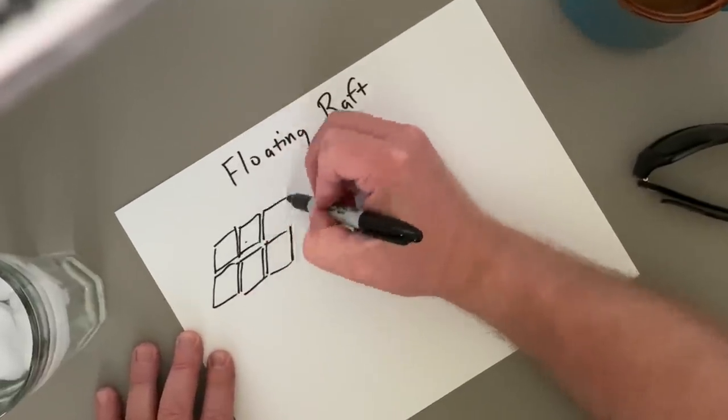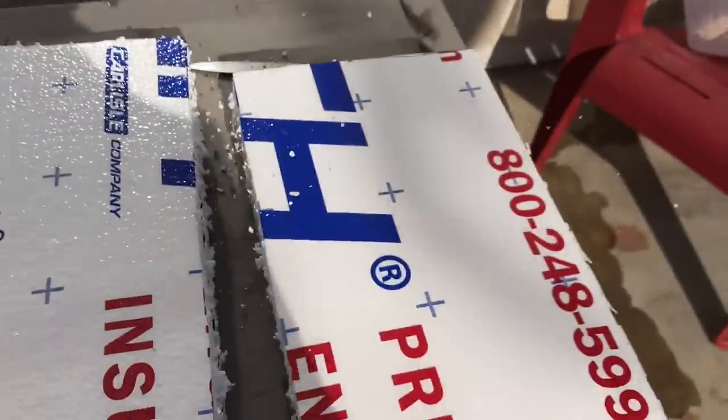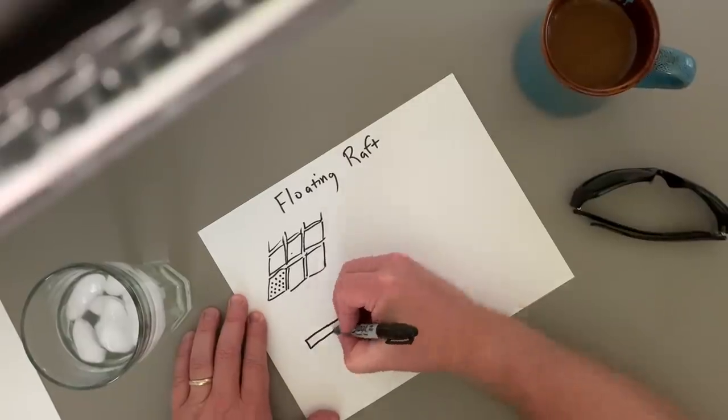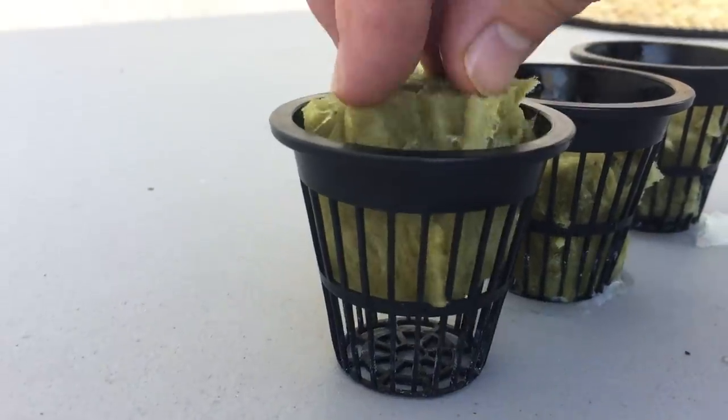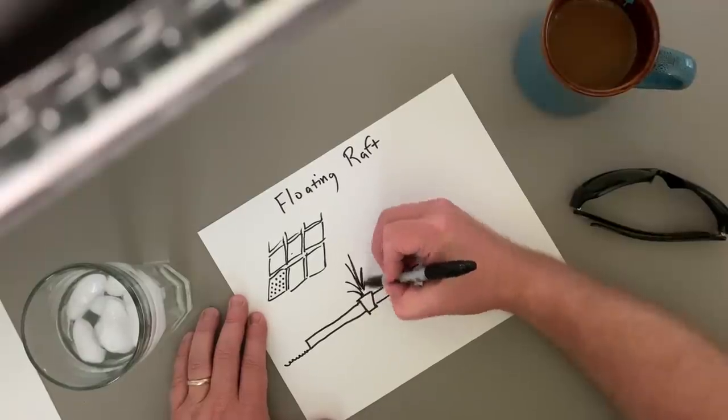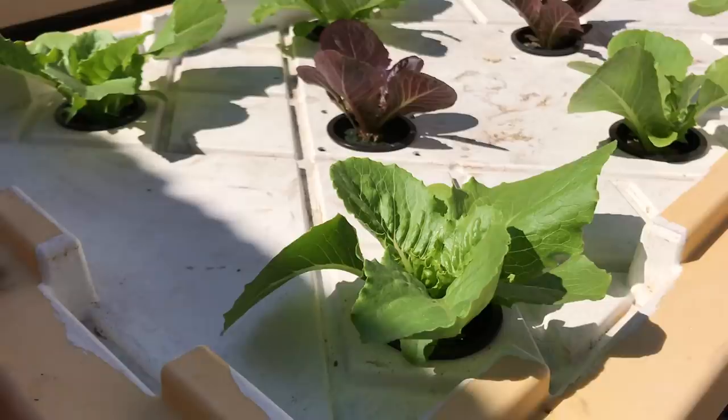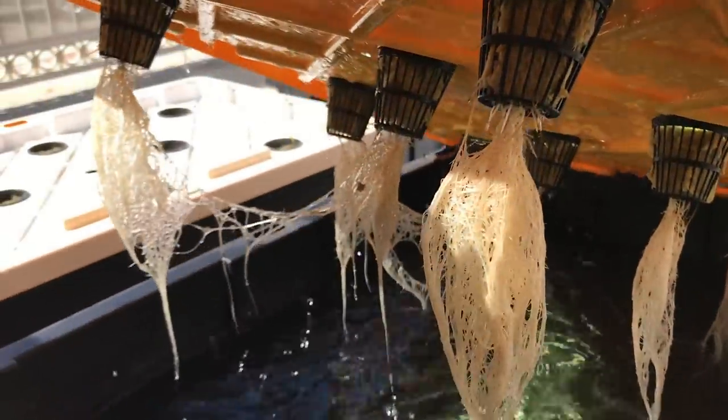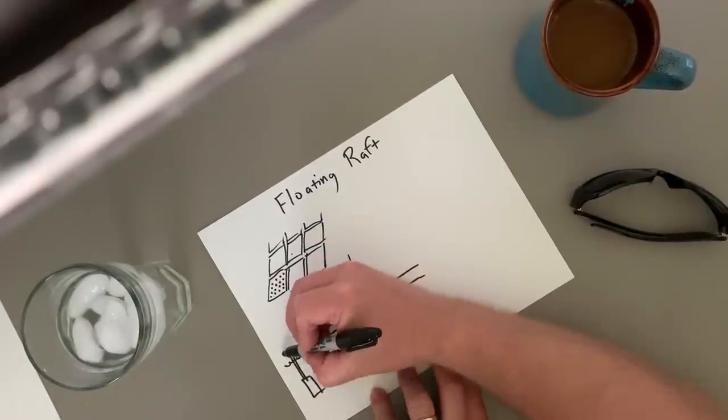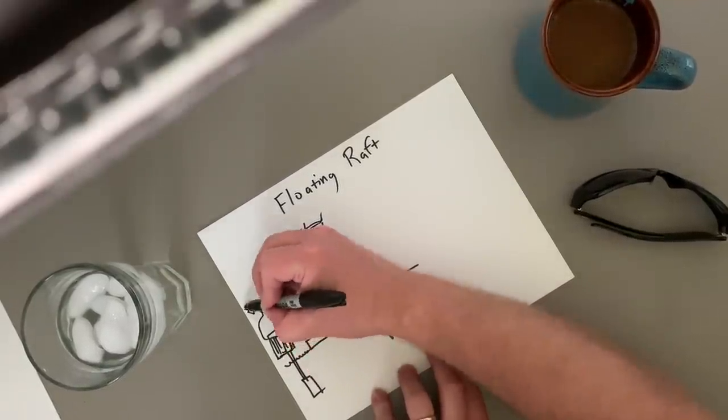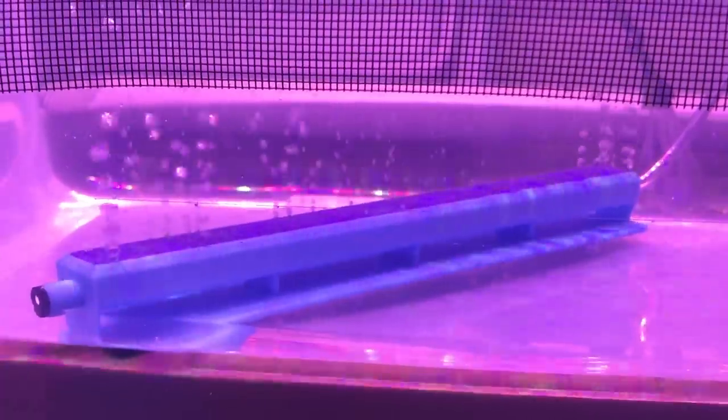A common hydroponic setup is the floating raft method. Sheets of styrofoam rest on the water. Net cups and rock wool hold up the plants. Growth is rapid, but covering the surface of the water interferes with gas exchange.